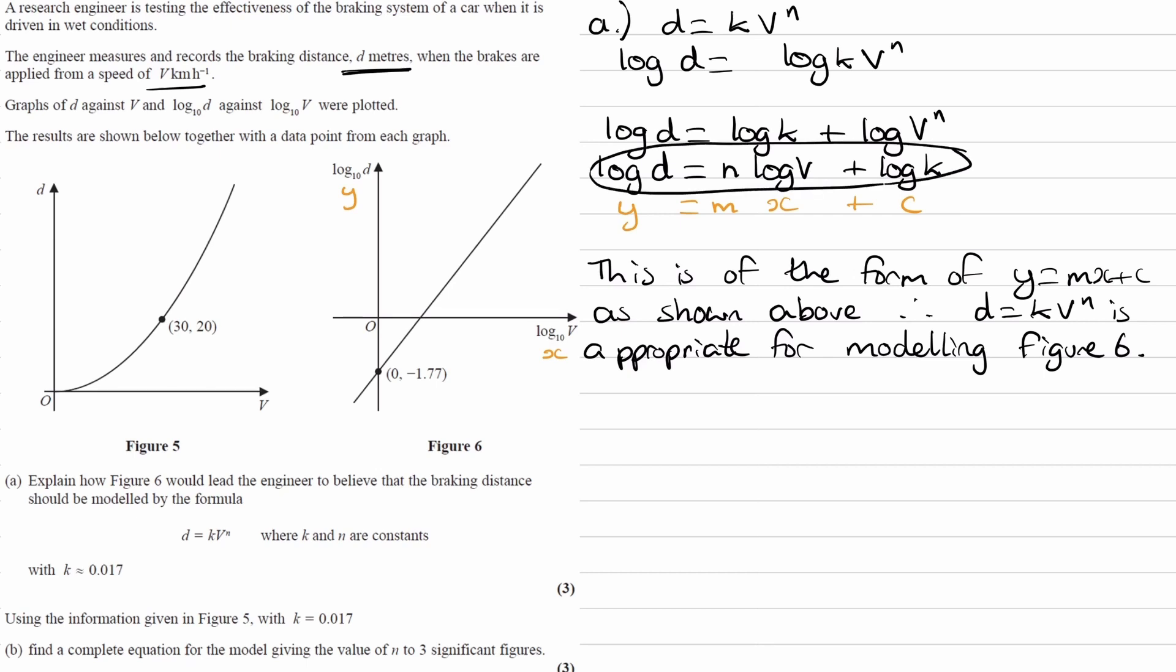So we can use the log equation that we have: log d equals n log v plus log k. That's in the form y equals mx plus c. Because this coordinate here, the x and y coordinates are log v and log d respectively, if you wanted to put those coordinates into one of these equations directly, we'd have to put it into this equation right here, as that one has log d and log v in it already.